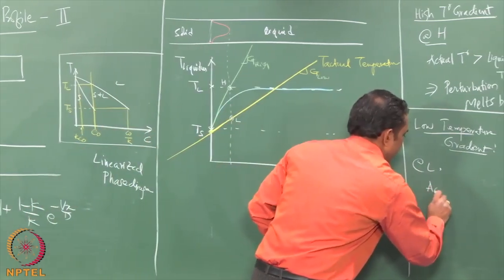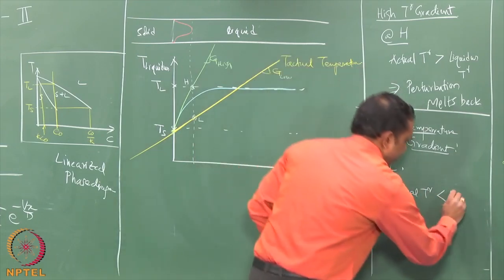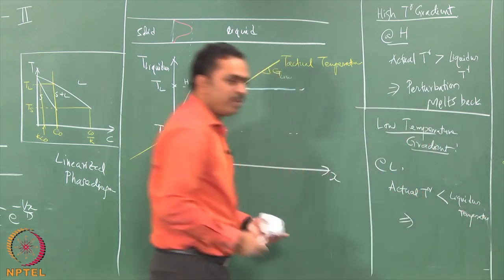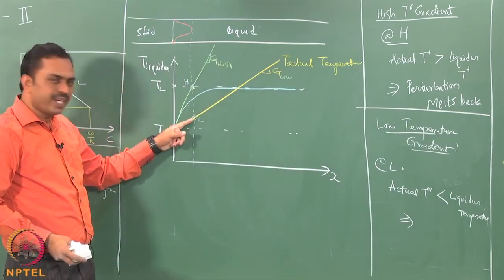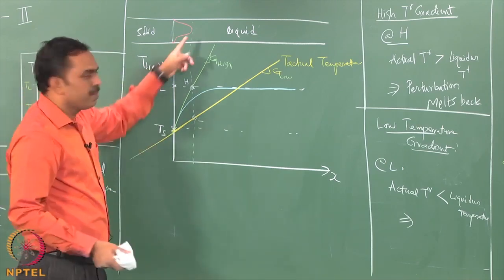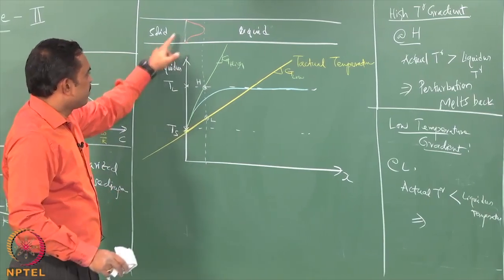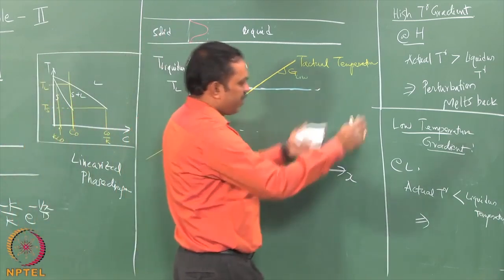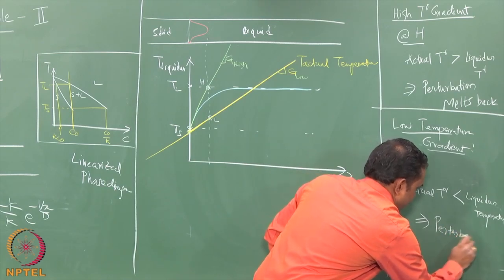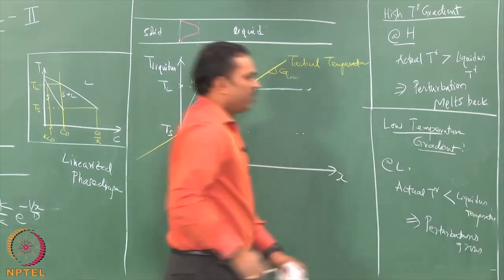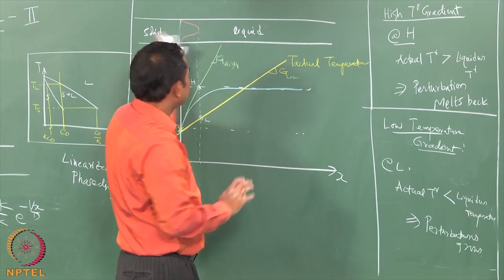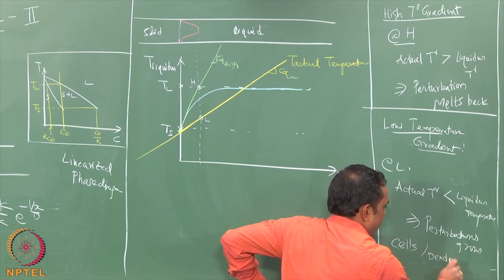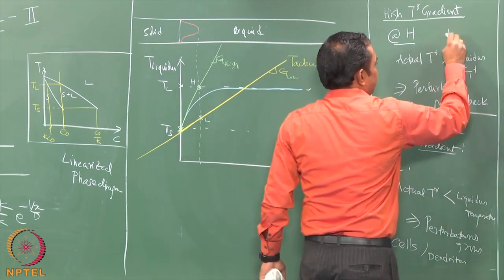At L, the actual temperature is less than the liquidus temperature. The bump is finding itself at a temperature below the liquidus, meaning it is in a condition suitable to grow. This breakage of the planar solidification front is going to take place, and you are going to have a perturbation that grows. In this case, the growth of the solid is going to be either cellular or dendritic in nature. In the high gradient case, you would get planar growth.